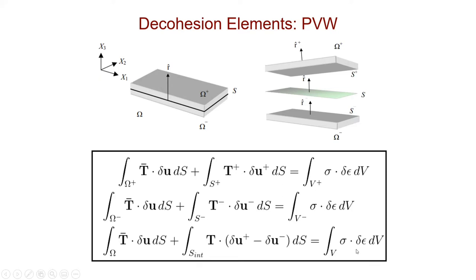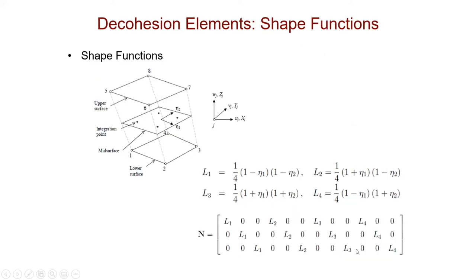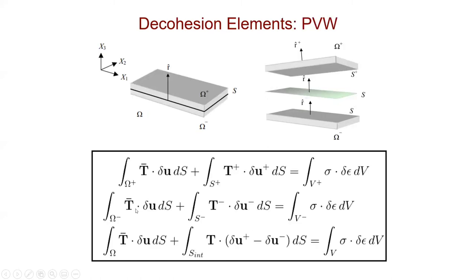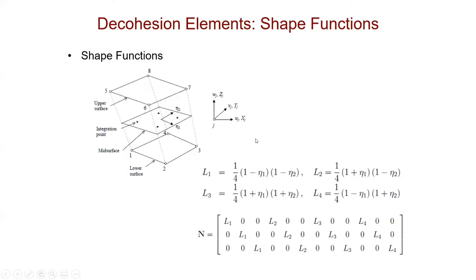That's your principle of virtual work. We don't have to go into this extensive detail right now. The bottom line is that we're going to use this type of element inserted between these two blocks of material that are governed by a principle of virtual work. As an example, the shape functions for an element like that could look like this. These are the isoparametric shape functions. This would be for four-noded. For eight-noded, it looks a lot more complicated. It would look very similar to what you've seen for a quadrilateral element.